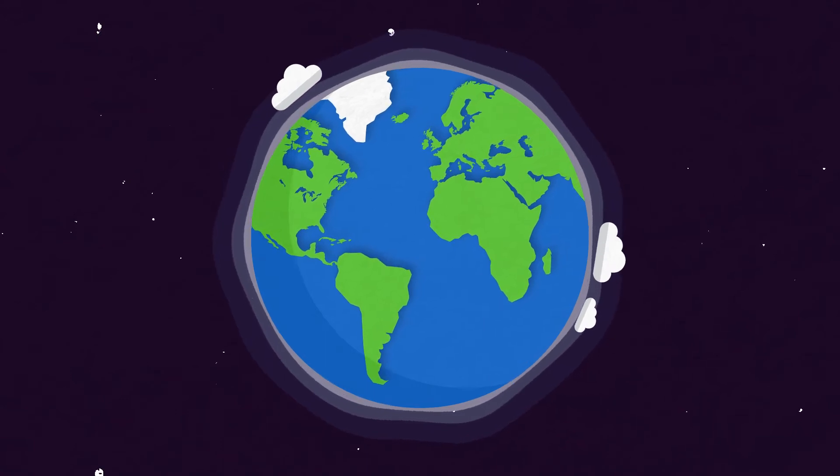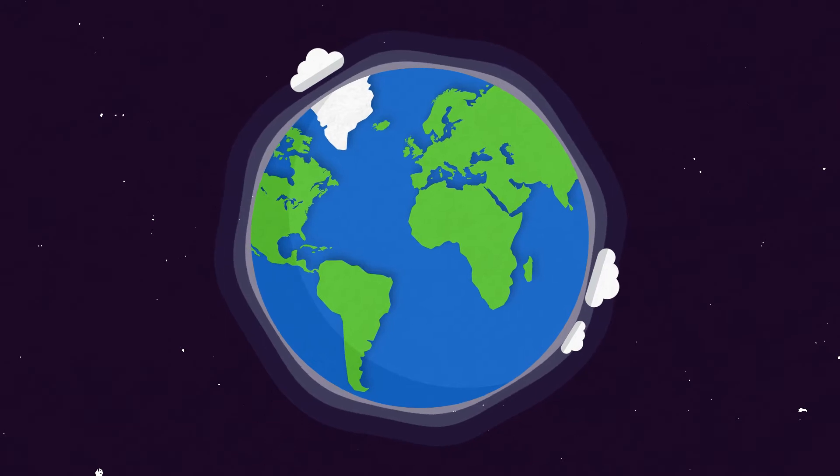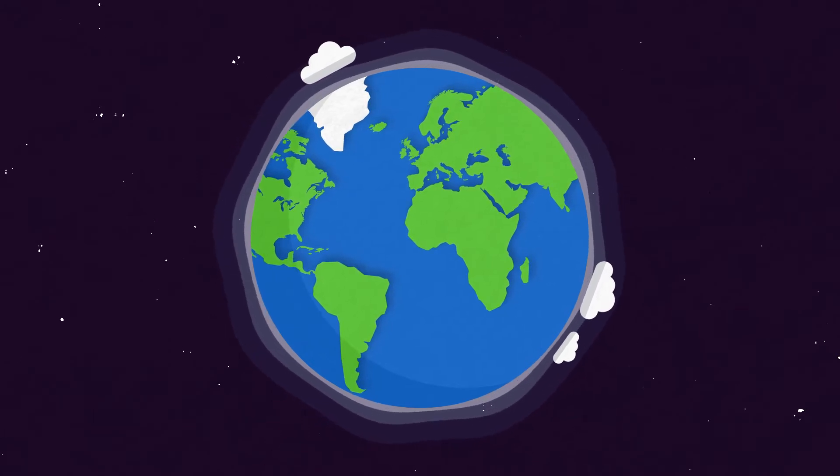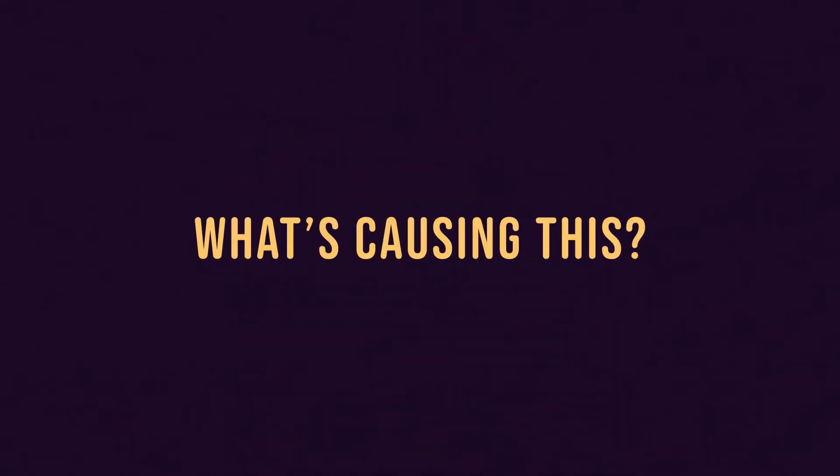There's only one Earth, and it's currently the only conceivable home for the species that live on it. However, our home is at risk of catastrophic effects from climate change. But what's causing this?